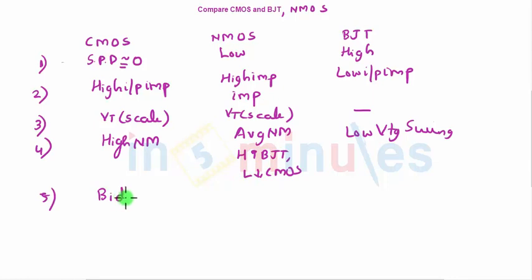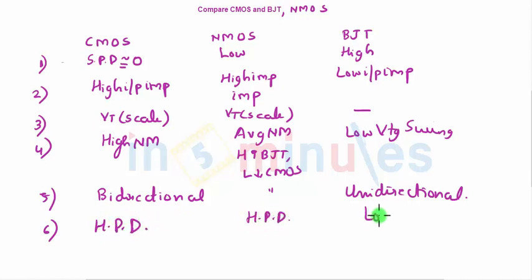This has bidirectional capability because drain and source are interchangeable. Same is the case here. This is unidirectional. High packaging density, that's the very reason. Again, for NMOS, also high packaging density. This has low packaging density.